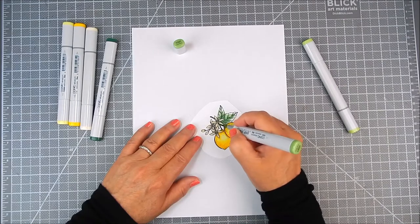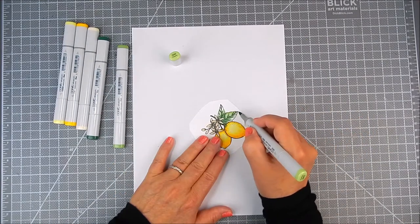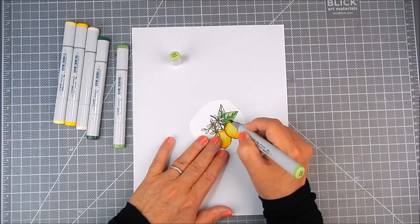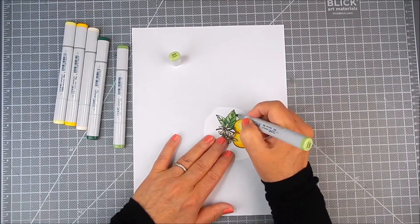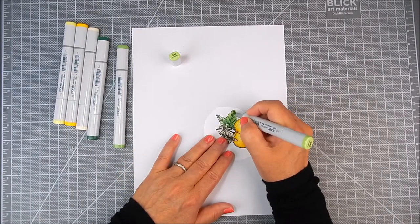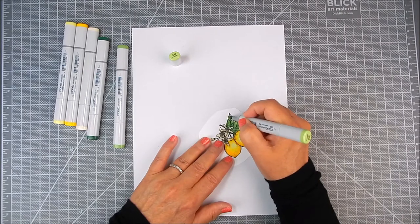And then I'm going to go in with a lighter shade to highlight the tips there. And it just really blends together when you use two or three shades of markers.